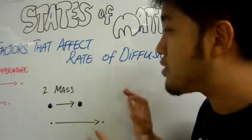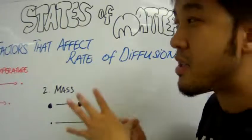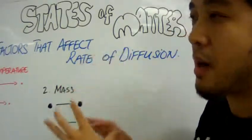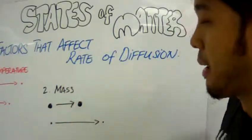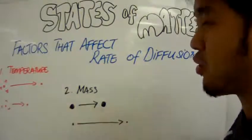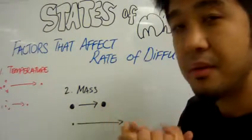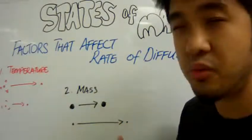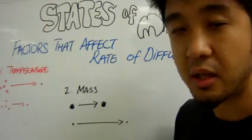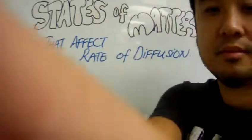So it's the same when it comes to talking about the rate of diffusion when you talk about the mass of those particles. Massive particles will travel much slower than smaller particles. That's it. These are the two factors that affect the rate of diffusion. Thank you.